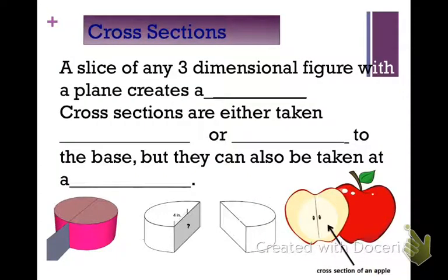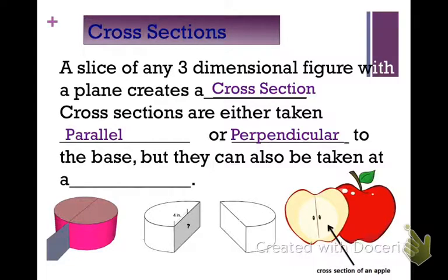A slice of any three-dimensional figure with a plane creates a cross section. These cross sections are either taken parallel or perpendicular. If we're thinking about it being parallel, we're talking parallel to the ground — we call that a horizontal cross section. The perpendicular cross sections would be called vertical because they are perpendicular to the base. They can also be taken at a diagonal, and we'll talk about what diagonal cross sections look like as well.